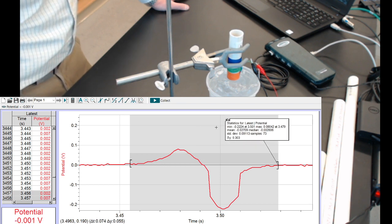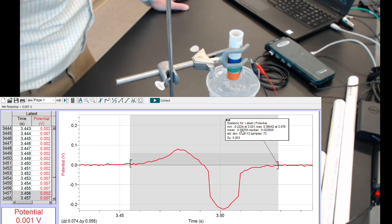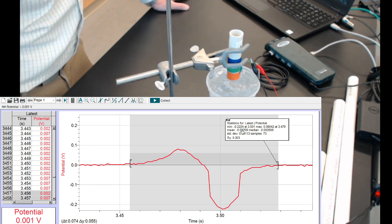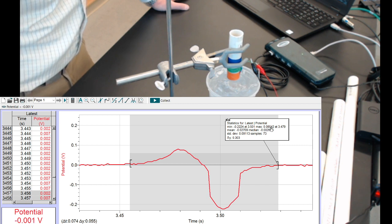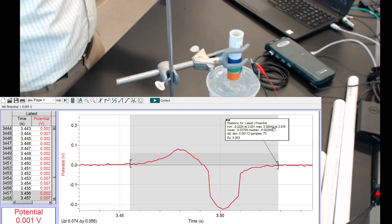And the statistics for this region give me the minimum value is minus 0.2224 volts at 3.501 seconds. The maximum is 0.08042 at 3.479 seconds. The mean is closer to zero, the mean number of samples and all that. What we really need are the minimum and the maximum.